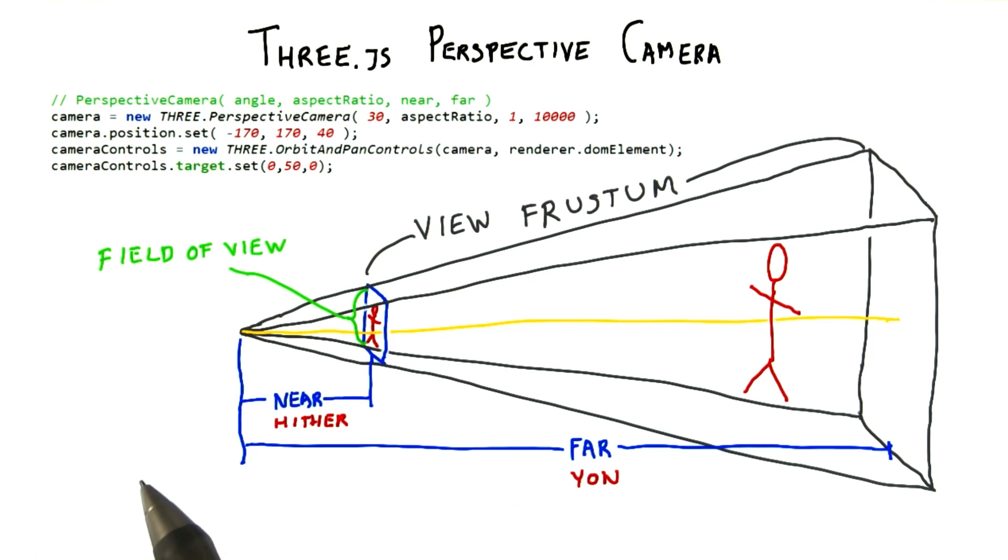The first argument for the perspective camera is the field of view. This is the angle between the top and bottom planes of the view pyramid. Notice that in Three.js, this number is specified in degrees, unlike many other angles which use radians.